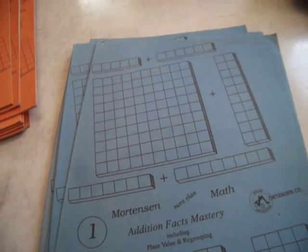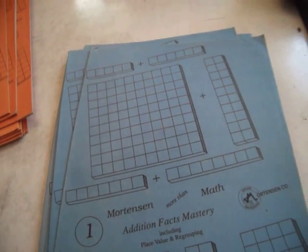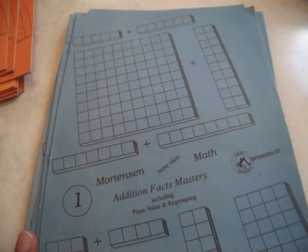But as important as multiplication is, the way you're going to get the multiplication is by using additions and getting Addition Facts Mastery down. So here are ten books of Addition Facts Mastery, and when we start off, it's pictures.